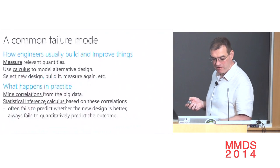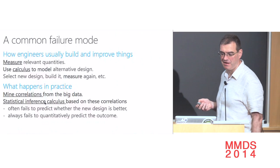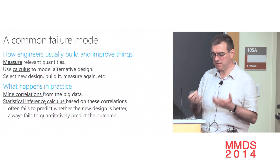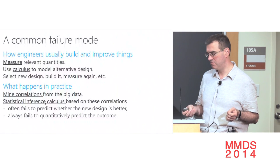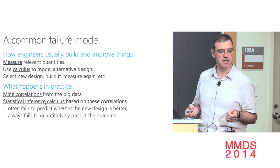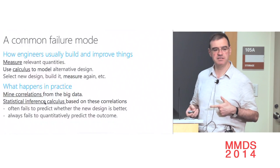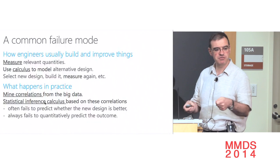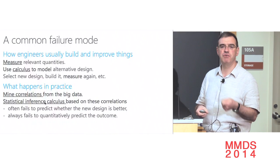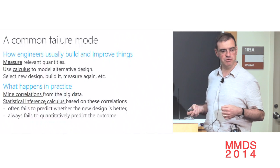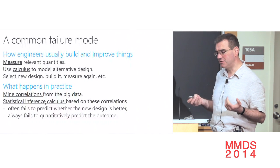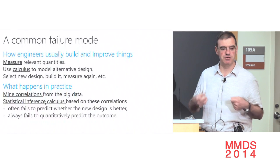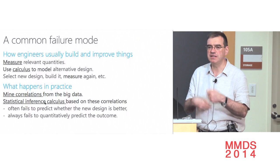Going back to the data scientist's problem: you have to think that they're half data scientists, half engineers. How do engineers build things? For about one century, the way we build dishwashers, automobiles, airplanes, and microchips is: build something, measure relevant quantities, use calculus to understand what changes could do, and when something looks promising, build it, measure, and hope what you measure matches what you calculated. Otherwise something's wrong and you do it again and again.